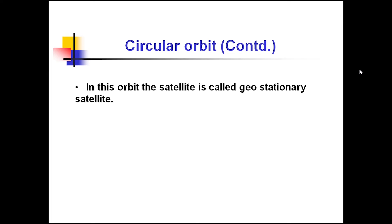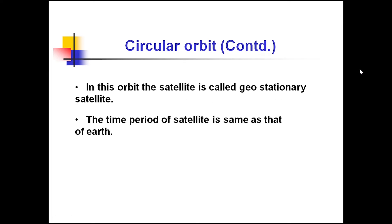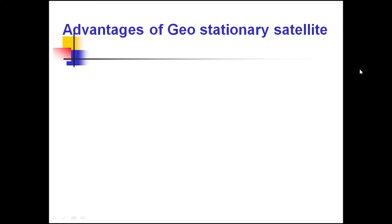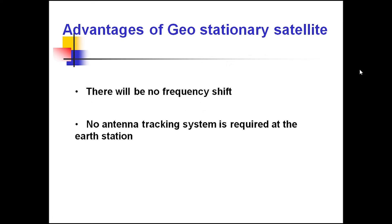In a circular orbit, the satellite is geostationary, meaning the time period of the satellite is the same as that of Earth. The main advantage is there is no frequency shift, no antenna tracking system is required, and hence 24-hour communication is possible.